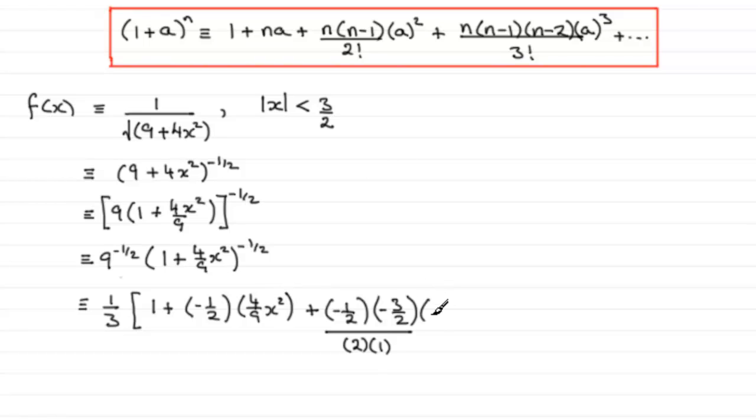And then we've got multiplied by a all squared, so a was the 4x²/9, so we've got (4x²/9)², and that is now squared. And we're looking for the first three nonzero terms; well clearly I can see that this isn't zero, this term isn't zero, and this term isn't zero, so essentially that's as far as we need to expand.